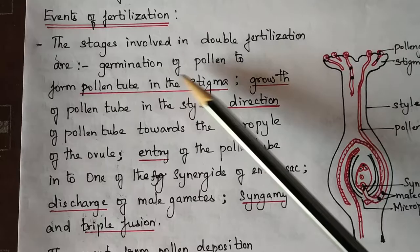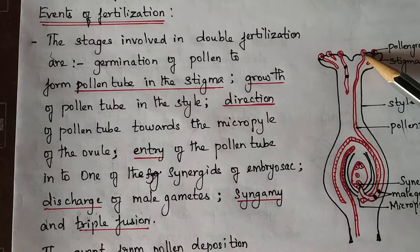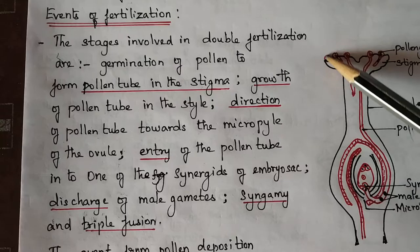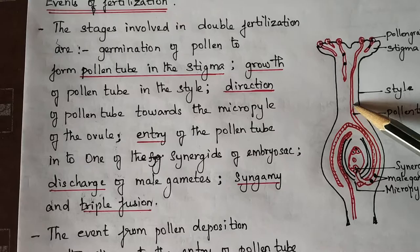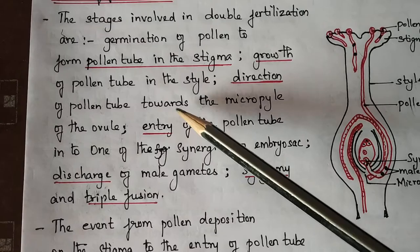The stages involved in double fertilization begin with germination of pollen to form a pollen tube in the stigma. Pollen grains germinate and a pollen tube forms in the stigma region. Then there is growth of the pollen tube in the style.